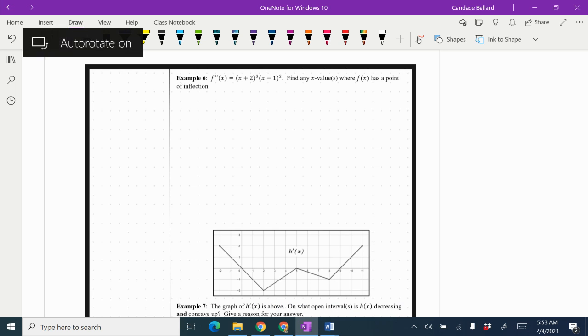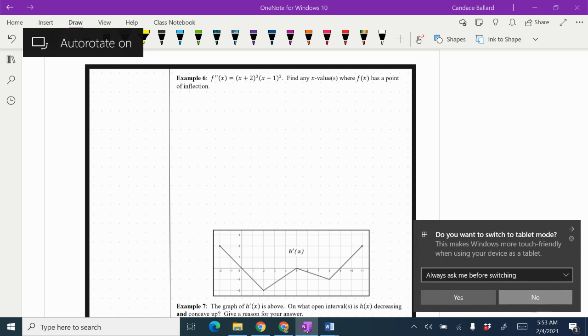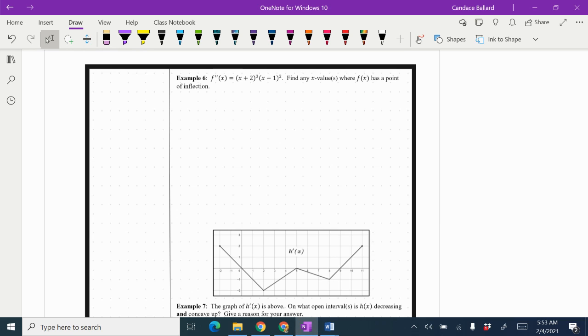In this example, we're going to look at Calculus 5.6, which is concavity and points of inflection, and we're looking at Example 6. This time it says you're given the second derivative. Find any x values where we've got a point of inflection.